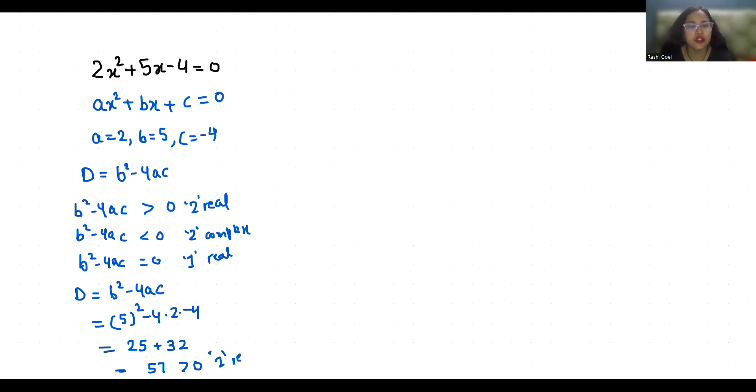So let's find out the real solutions. 2x² + 5x - 4 = 0. I'm going to use quadratic formula that is -b ± √(b² - 4ac) / 2a.